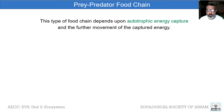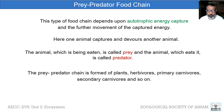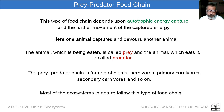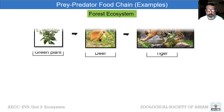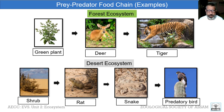The prey-predator food chain depends upon autotrophic energy capture and further movement of captured energy. Here one animal captures and devours another — the animal being eaten is called the prey and the one that eats it is the predator. This food chain is formed of plants, herbivores, primary carnivores, secondary carnivores, and so on. Most ecosystems follow this type. Examples include the forest ecosystem (green plant → deer → tiger) and the desert ecosystem (shrub → rat → viper → predatory birds).